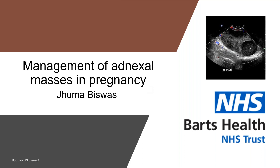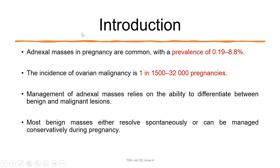As you know, adnexal masses are quite common in pregnancy and the good thing is that mostly they are benign, so we can manage conservatively. But we need to know the important differential diagnosis and the cutoff for conservative management. The overall prevalence is 0.19 to 8.8%, and the chance of malignancy is very rare — about one in 1,500 to 32,000 pregnancies. Management relies on the ability to differentiate between benign and malignant, as benign masses either resolve spontaneously or can be managed conservatively during pregnancy.